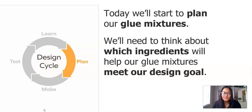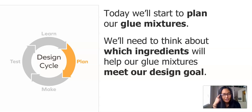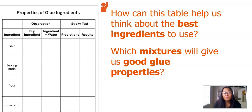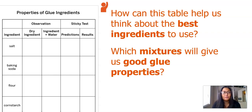After rereading parts of Jelly Bean Engineer, we're going to start to make a plan about our glue mixtures. We're going to be in the plan part of our design cycle, so we need to think about which ingredients will help our glue mixtures meet our design goal — to make a glue that is sticky. On the left we have the table: the properties of glue ingredients. We could use what we observed and the results of our sticky tests to think about which ingredients to use.